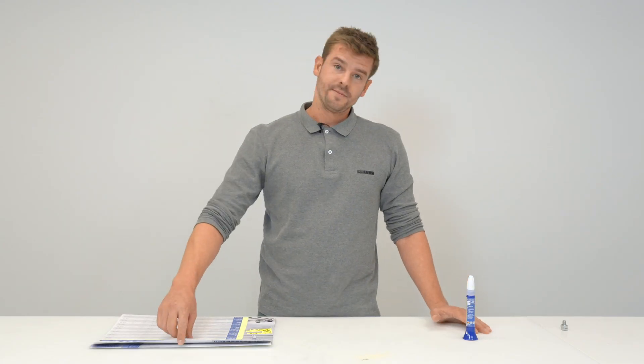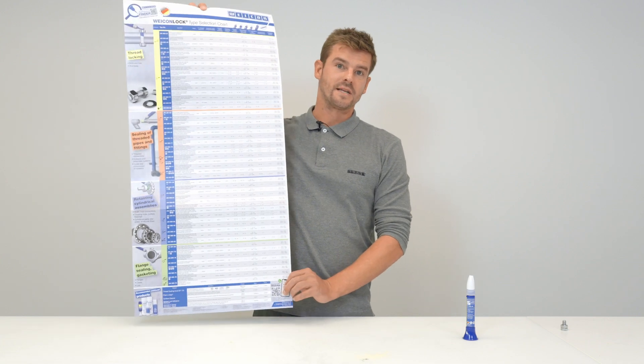In addition, the Vicon Lock range includes products for the retaining of cylindrical assemblies, pipe and thread sealants, as well as flange sealants. For the different application areas, we have compiled our type selection chart.